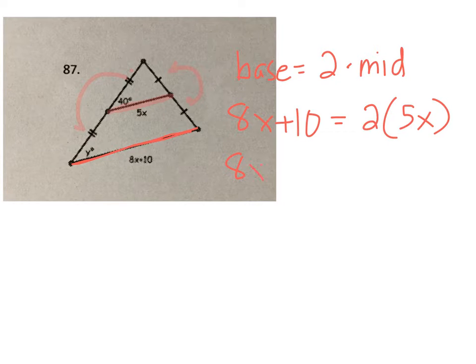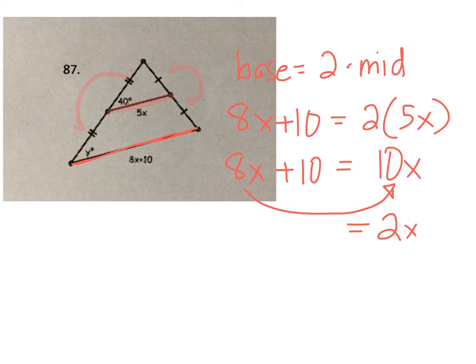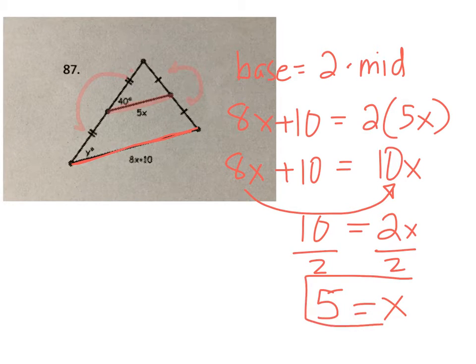And we solve this for x. 2 times 5 times x is 10x. We will subtract the 8x over to here. 10x minus 8x is 2x. And then last, we divide and x is 5. There we go. There's x.